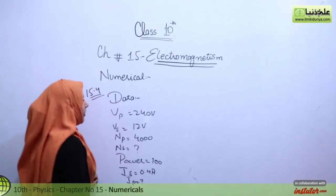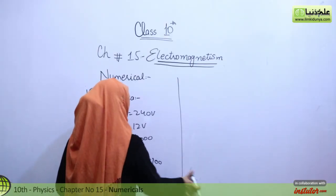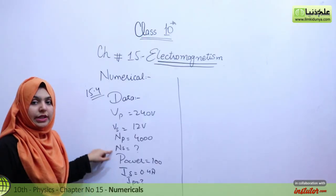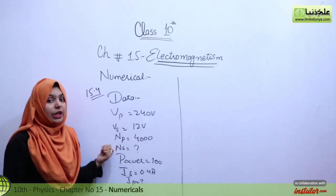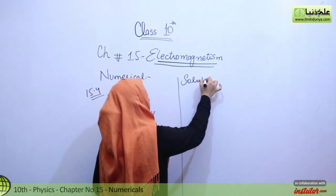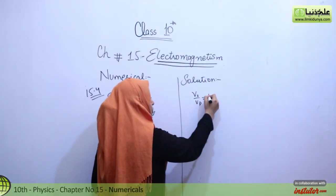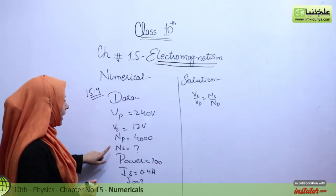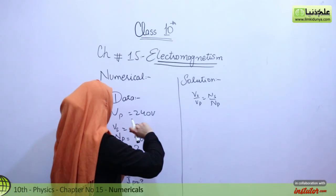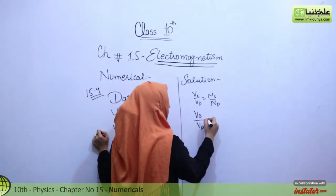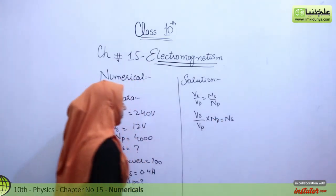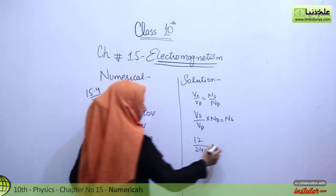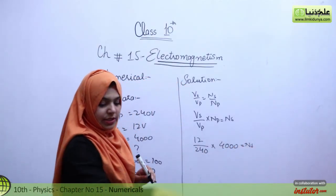First, we need to find NS. The formula rearranged gives: VS over VP multiplied by NP equals NS. Now we put in the values: VS equals 12 volts, VP equals 240 volts, NP equals 4,000 turns.